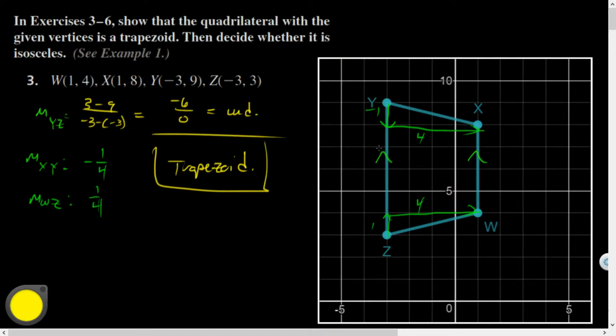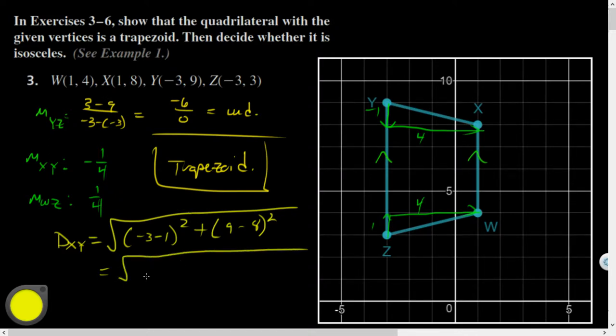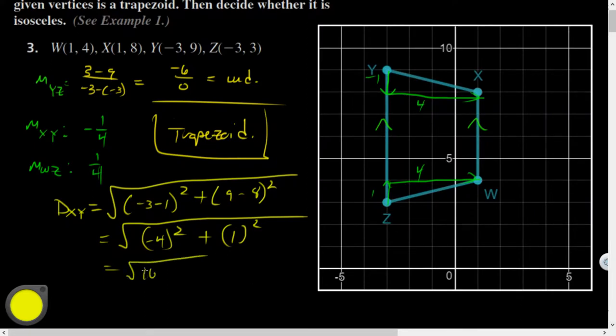All right, they did ask us to decide whether or not it was isosceles, which would mean I would be analyzing these legs and trying to determine if their distances are the same and therefore congruent by definition of congruent. So, we'll do one distance formula real quick. Let's see, I'll call that dXY is equal to the square root of negative 3 minus 1 all squared plus 9 minus 8 all squared. Actually, distance formula doesn't matter as much as slope as far as getting the sequence correct because these all get squared anyway and become positive. Square root of negative 4 all squared plus 1 squared which, notice, these numbers are actually the vertical and horizontal distances as seen. And that's going to be the square root of 16 plus 1 or the square root of 17. If you do the other one as well, you'd see it's the same.